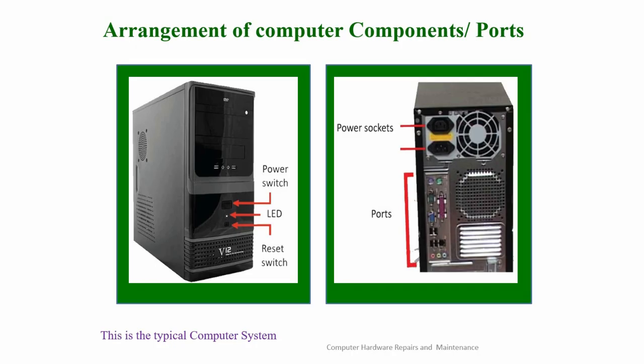This is a typical arrangement of a desktop computer — a complete control unit with everything connected to it. This is the power switch, the LED light that indicates the system is working normally, and this is where you plug in the power cord.